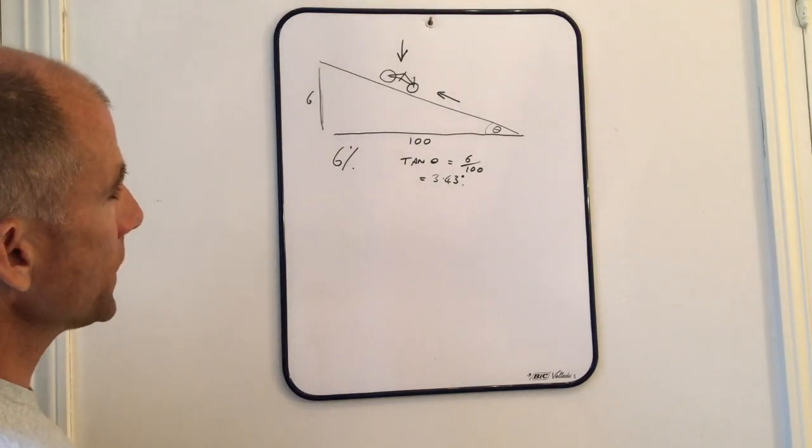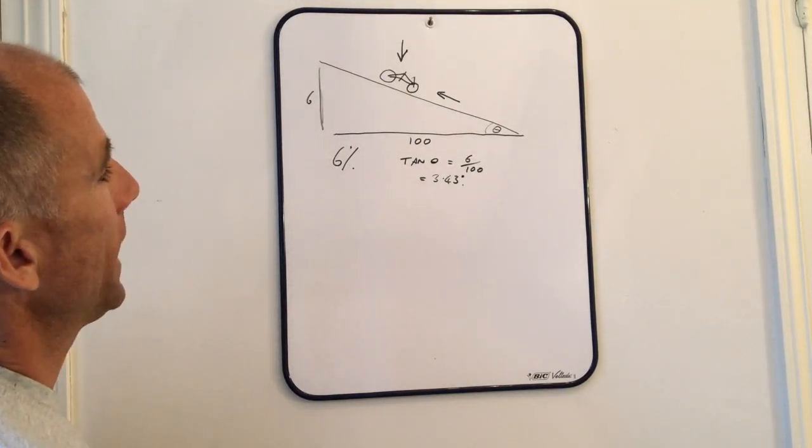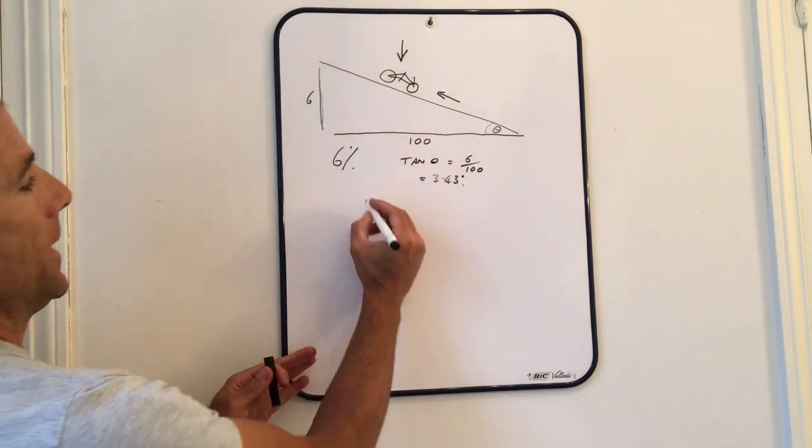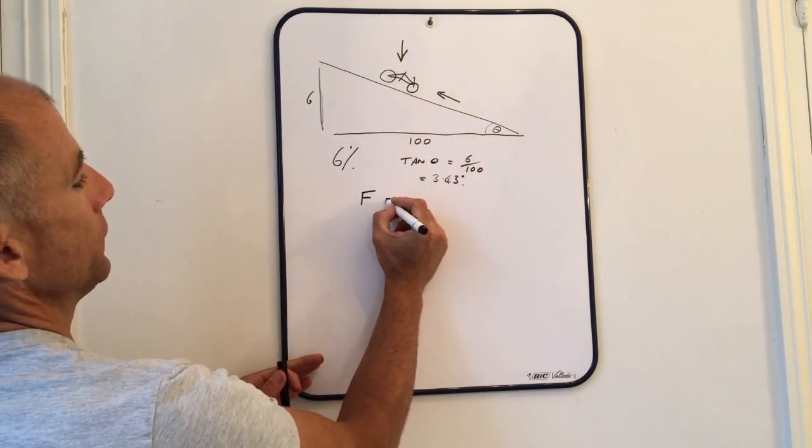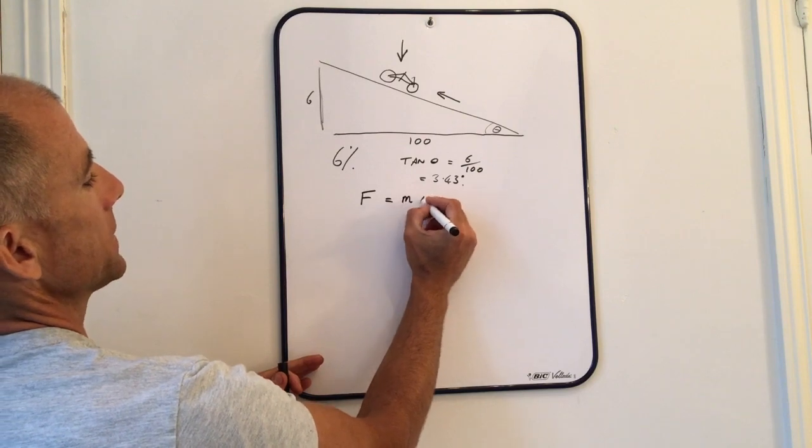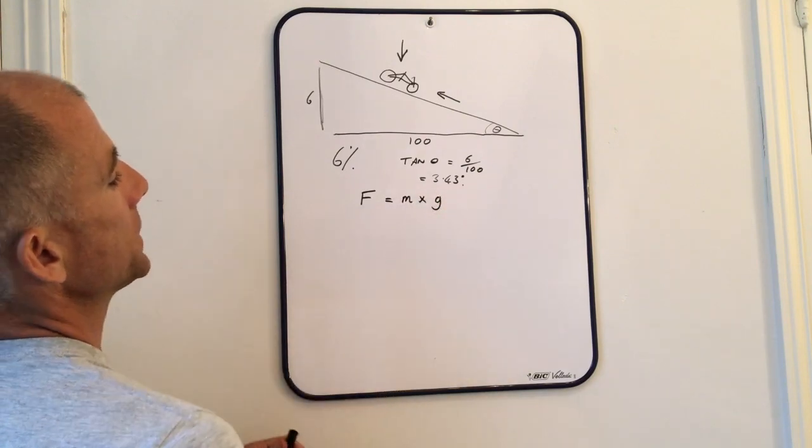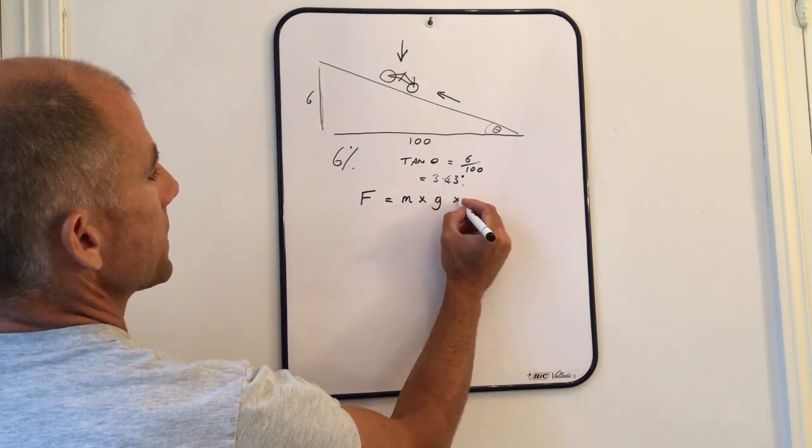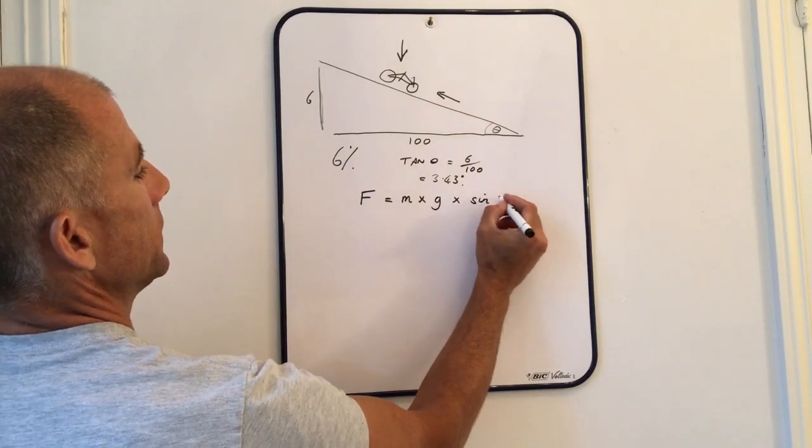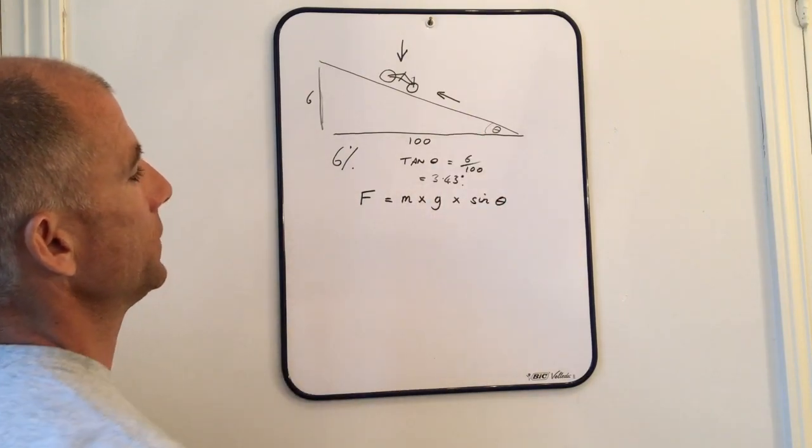The first step is to work out the gravity force. The gravity force is a function of your mass times the gravity constant times the sine of the angle of the slope.